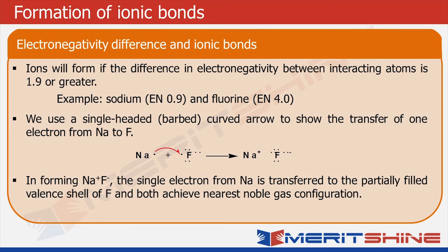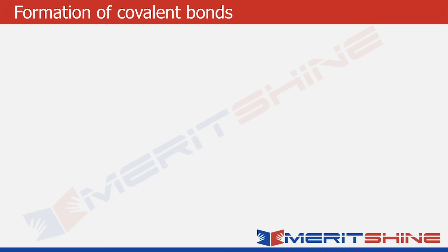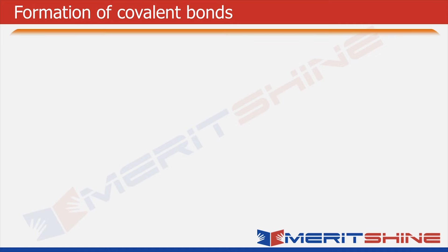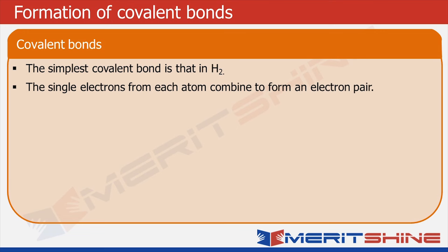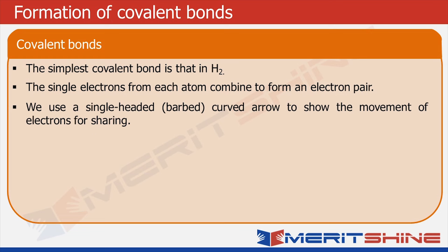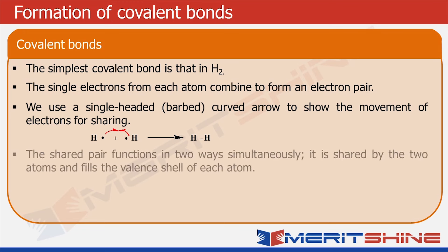Now let us understand covalent bonds. Please pay extra attention here because we will use this extensively in organic chemistry. The simplest covalent bond is that of the hydrogen molecule. The single electron from each atom combines to form an electron pair. The shared pair functions in two ways simultaneously — it is shared by two atoms and fills the valence shell of each atom.